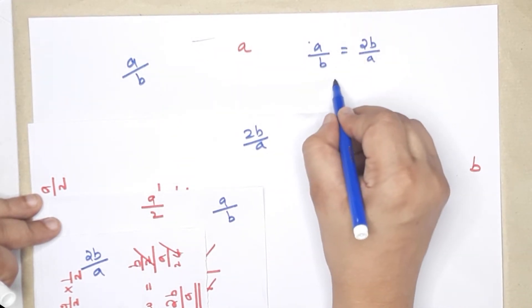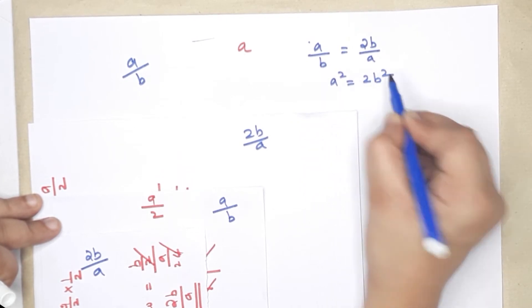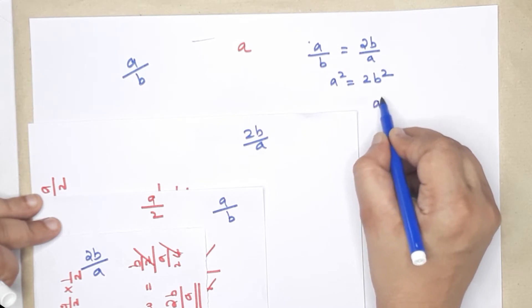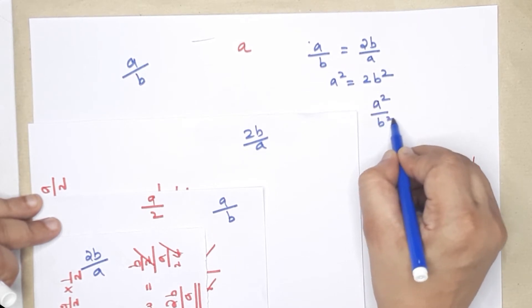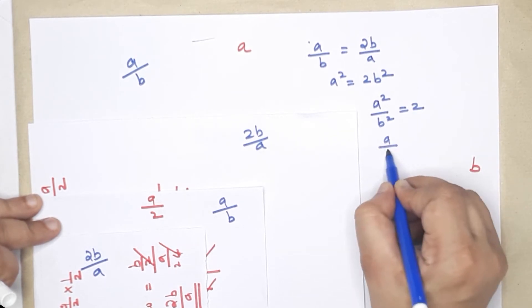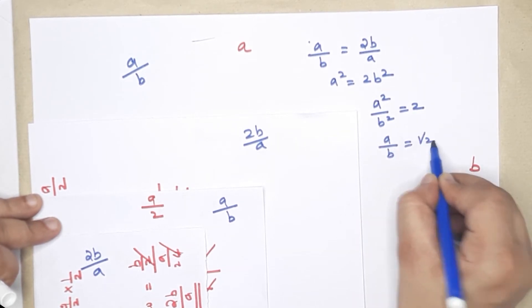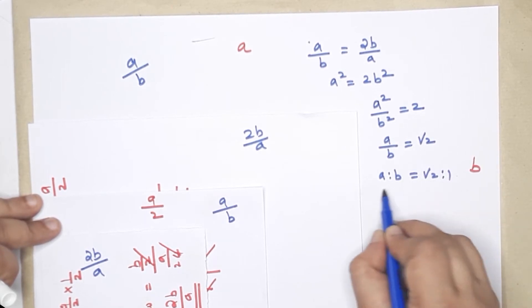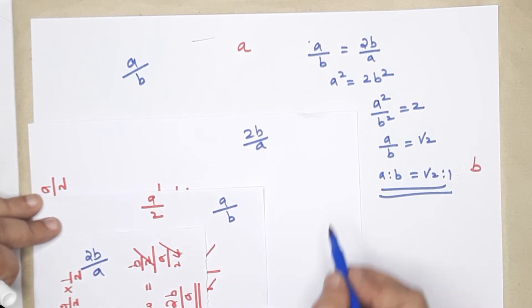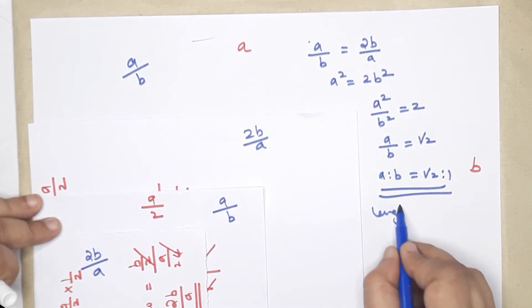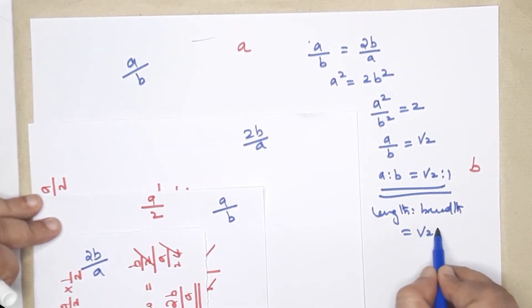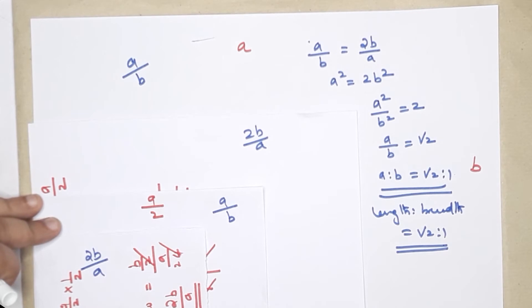A by B is equal to 2B by A. Then A squared is equal to 2B squared. So A squared by B squared equals 2. Therefore A by B equals root 2. So A is to B equals root 2 is to 1. This length-to-breadth ratio equals root 2 is to 1, so A4 is equal to 1.